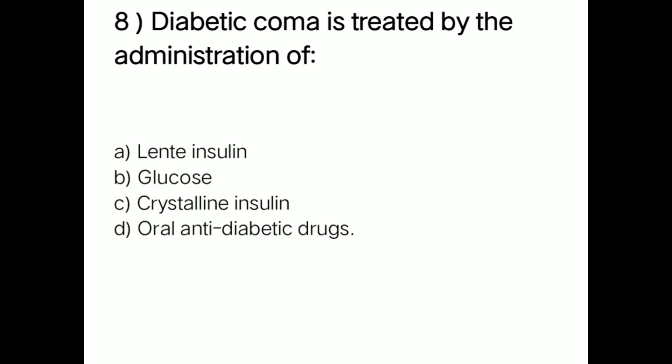Next question: diabetic coma is treated by administration of — option A: lente insulin; option B: glucose; option C: crystalline insulin; option D: oral anti-diabetic drugs. Right answer is option C — crystalline insulin. Diabetic coma is treated by administration of crystalline insulin.